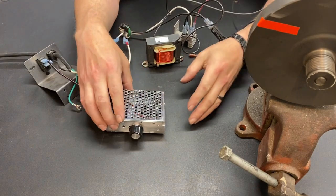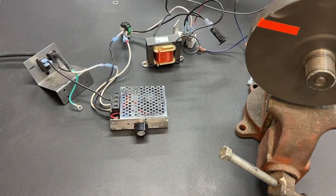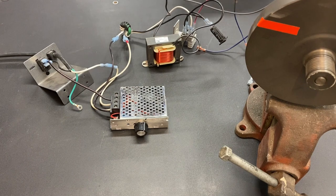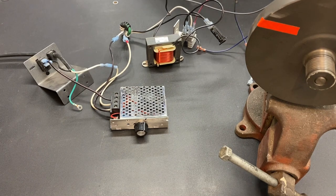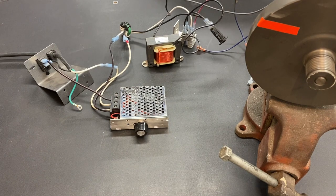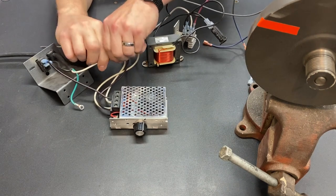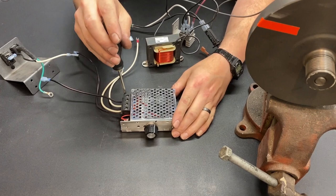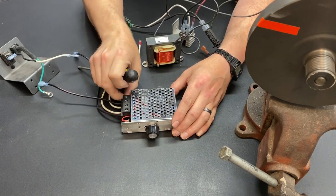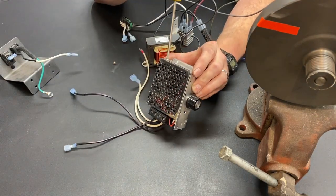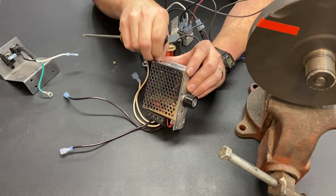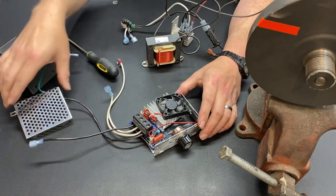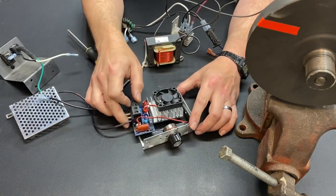So, how do we measure that? Well, the first thing we got to do is we need to take apart our SCR voltage controller, so we can get to the potentiometer. I've already disconnected the power. Safety first.